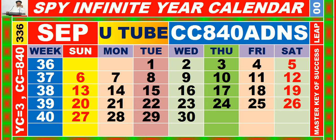Calendar for the month of September, having calendar code equal to 840.